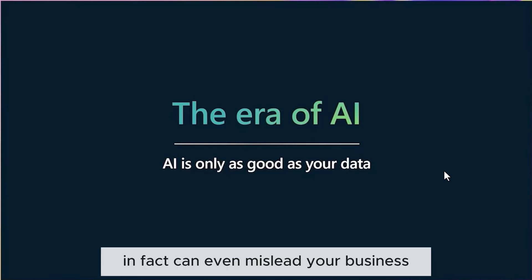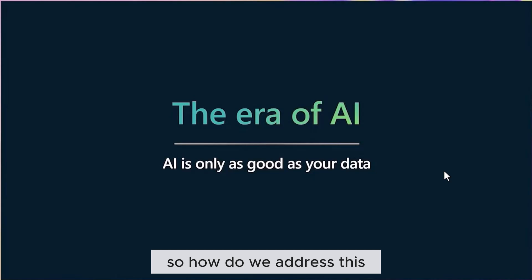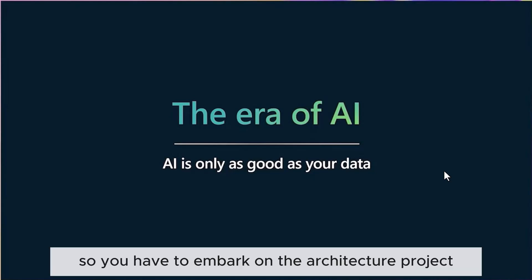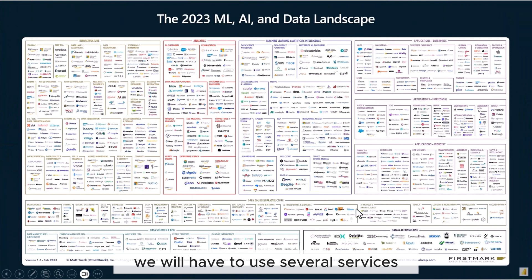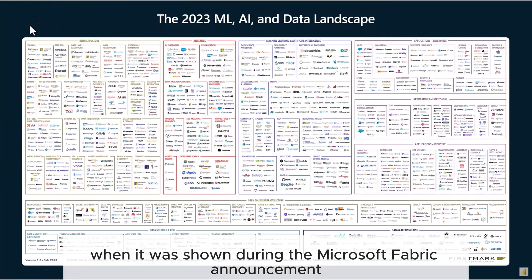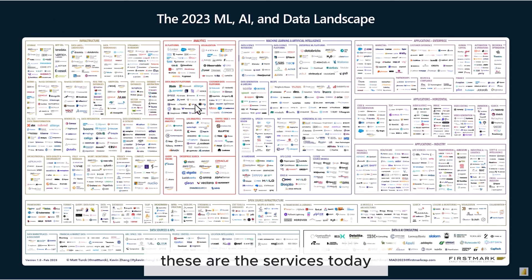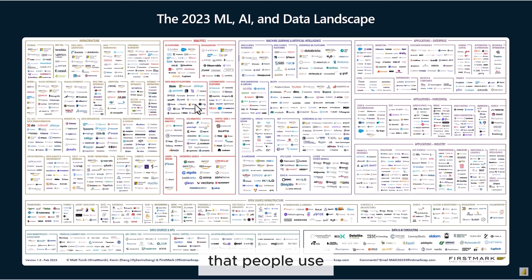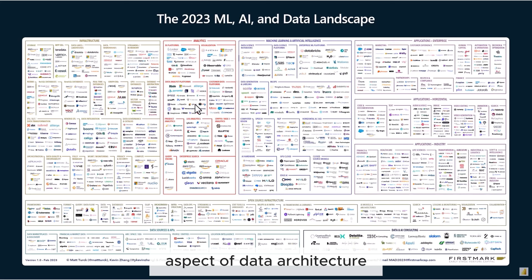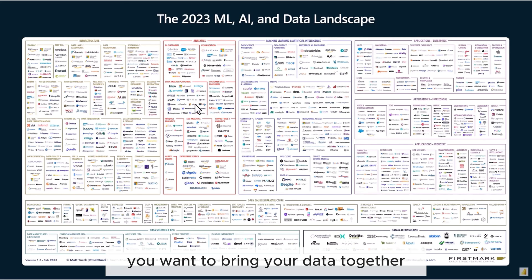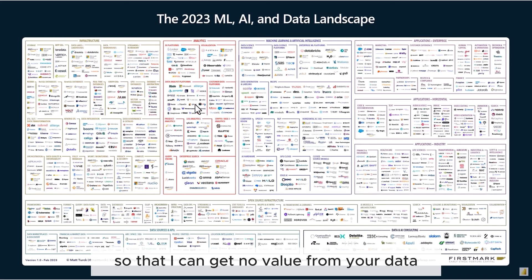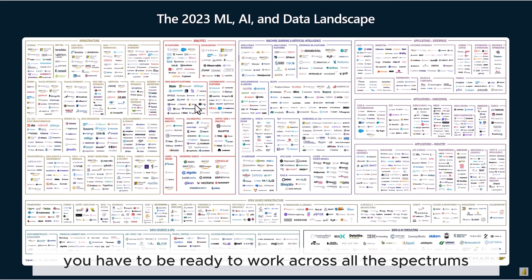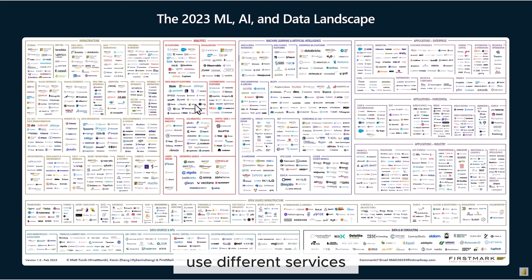In fact, poor data can even mislead your business. So how do we address this? You have to embark on a data architecture project. From my past experience working on architecture projects, we have to use several services. This was highlighted during the Microsoft Fabric announcement — these are the services that people use whenever they're working on this aspect of data architecture. You want to bring your data together and put the infrastructure together so that you can get more value from your data. You have to be ready to work across the full spectrum and use different services.